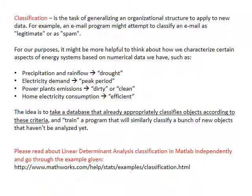Examples of energy classification would be: looking at records of precipitation and stream flow and describing them as a drought or not a drought; classifying electricity demand as a peak or non-peak period; power plant emissions as dirty or clean; home electricity consumption as efficient or not. The idea is to take a database that already appropriately classifies objects according to some criteria, train it, and then similarly classify new objects that haven't been analyzed yet. There are examples of different types of classification techniques linked at the bottom — I'd suggest going through those.